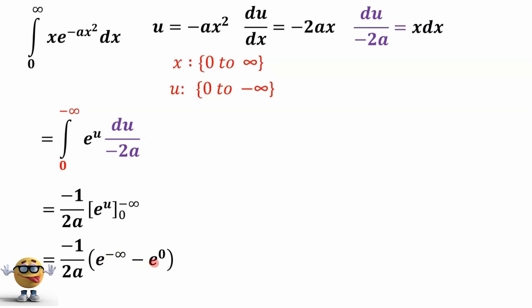This goes to 0, right? And this goes to 1. So since this is 0, this is like a negative 1, which cancels out with this negative. So the whole thing becomes positive 1 over 2a.